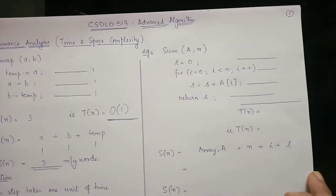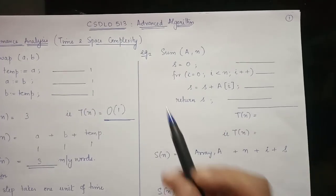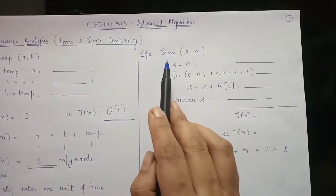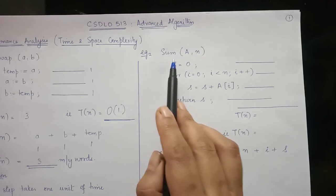Now coming to the second example, here we have a code snippet to compute the sum of all elements in an array.